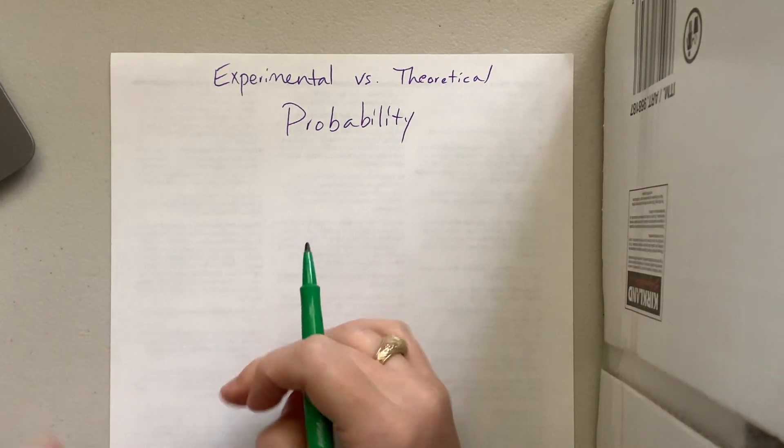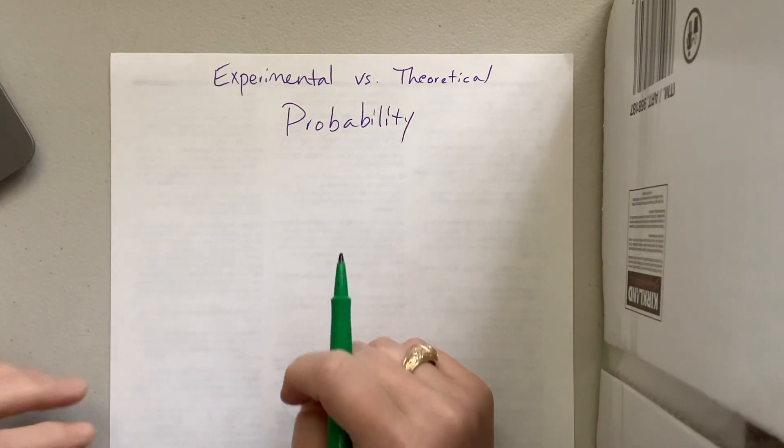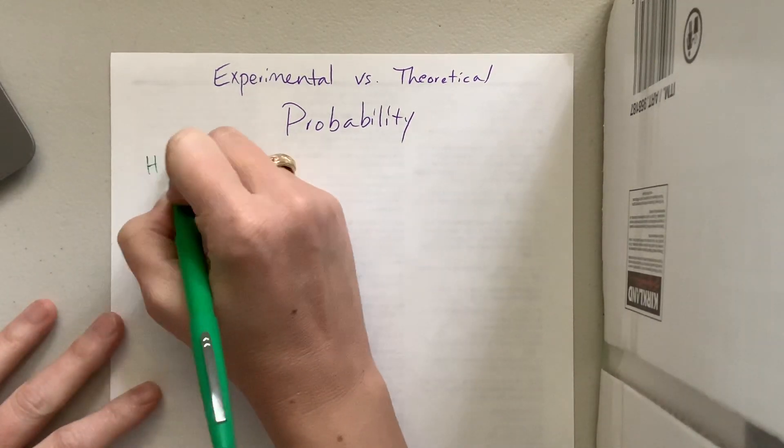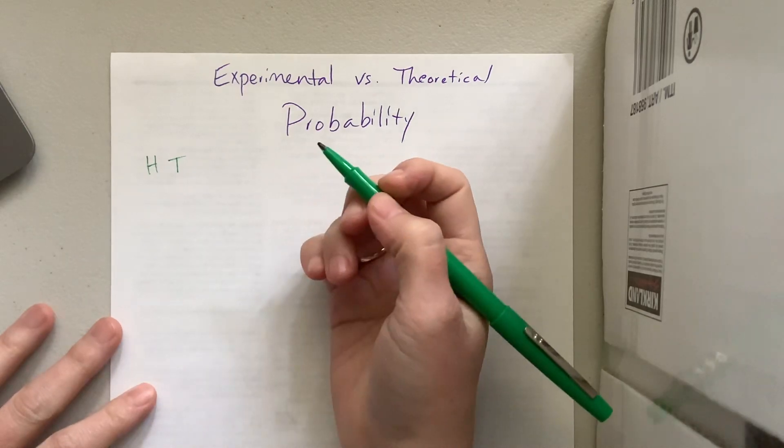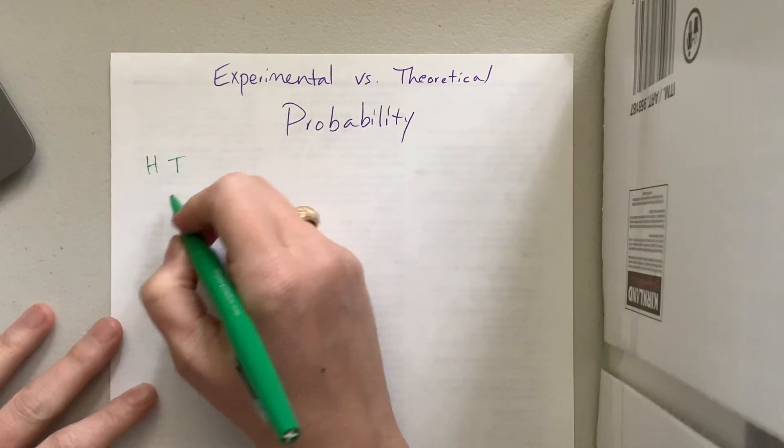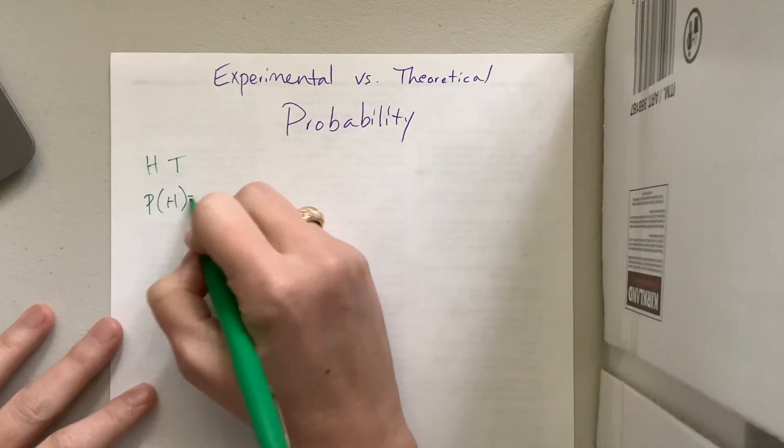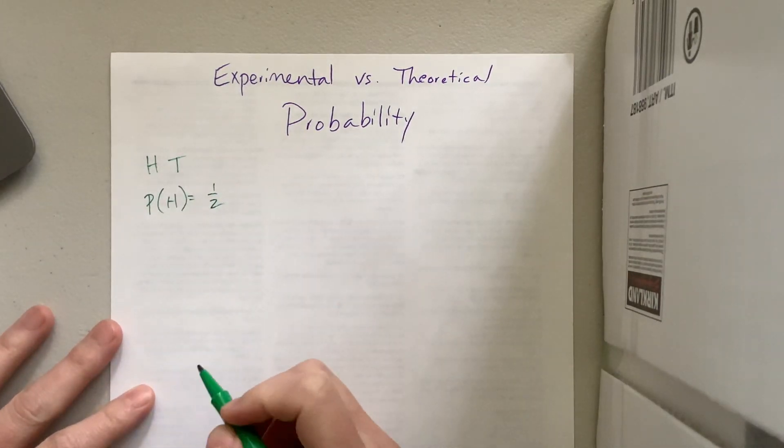When we talk about theoretical probability, what's the probability that you flip a coin and you get a heads? If it's an unbiased coin with two sides, your options are either heads or tails, so the probability of flipping a coin and getting heads would be one out of two, a probability of one half.